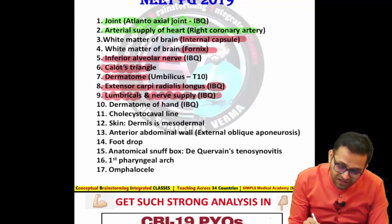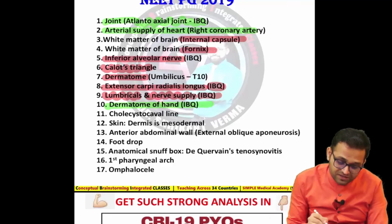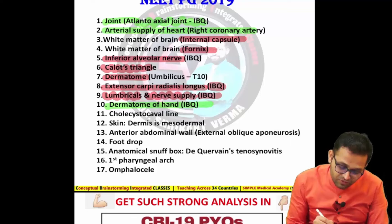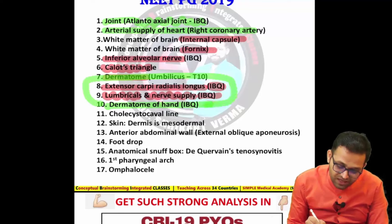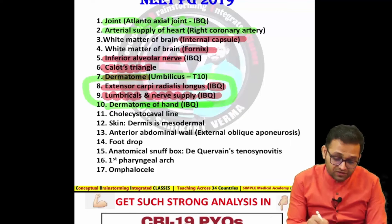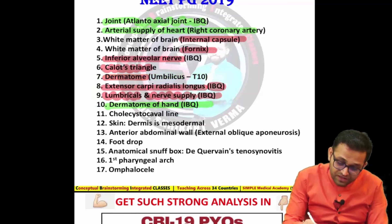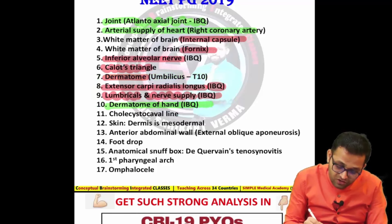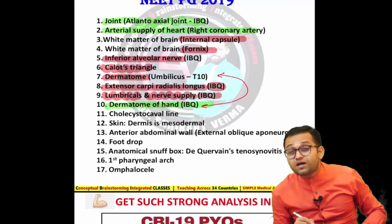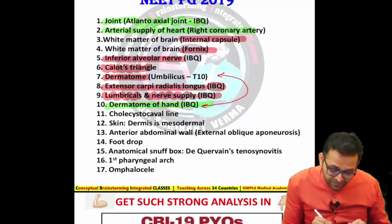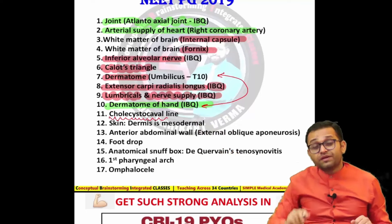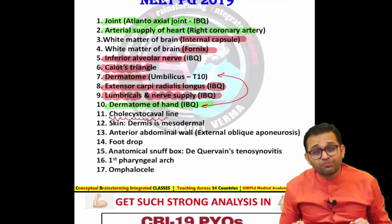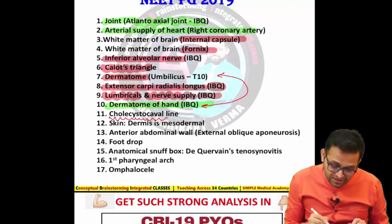Dermatome of the hand was also asked. So two dermatomes were tested: the umbilicus and the dermatome of the hand. You cannot neglect the dermatome topic — no exam is possible without dermatome knowledge. Similarly, the cholecystoduodenal line and gallbladder-liver anatomy are important points for surgeons.